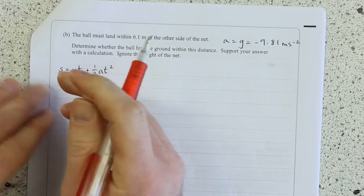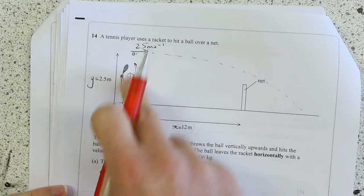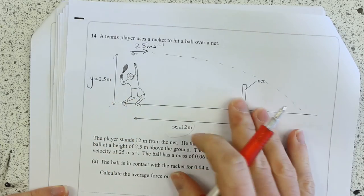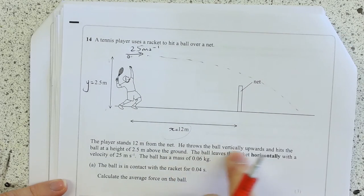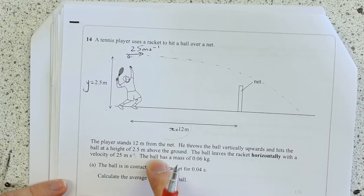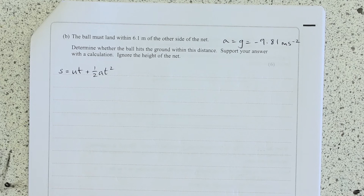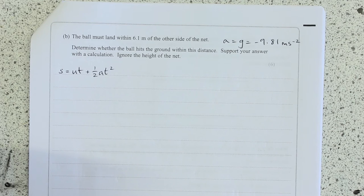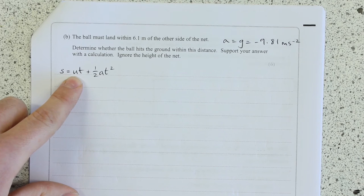We know that the initial velocity of the ball in the vertical direction was 0, but we don't know that, do we? He hits the ball up at a height of 2.5, but I think we can probably assume that. Especially as it says he hits the ball horizontally initially, we can assume that the initial velocity in the Y dimension is 0.